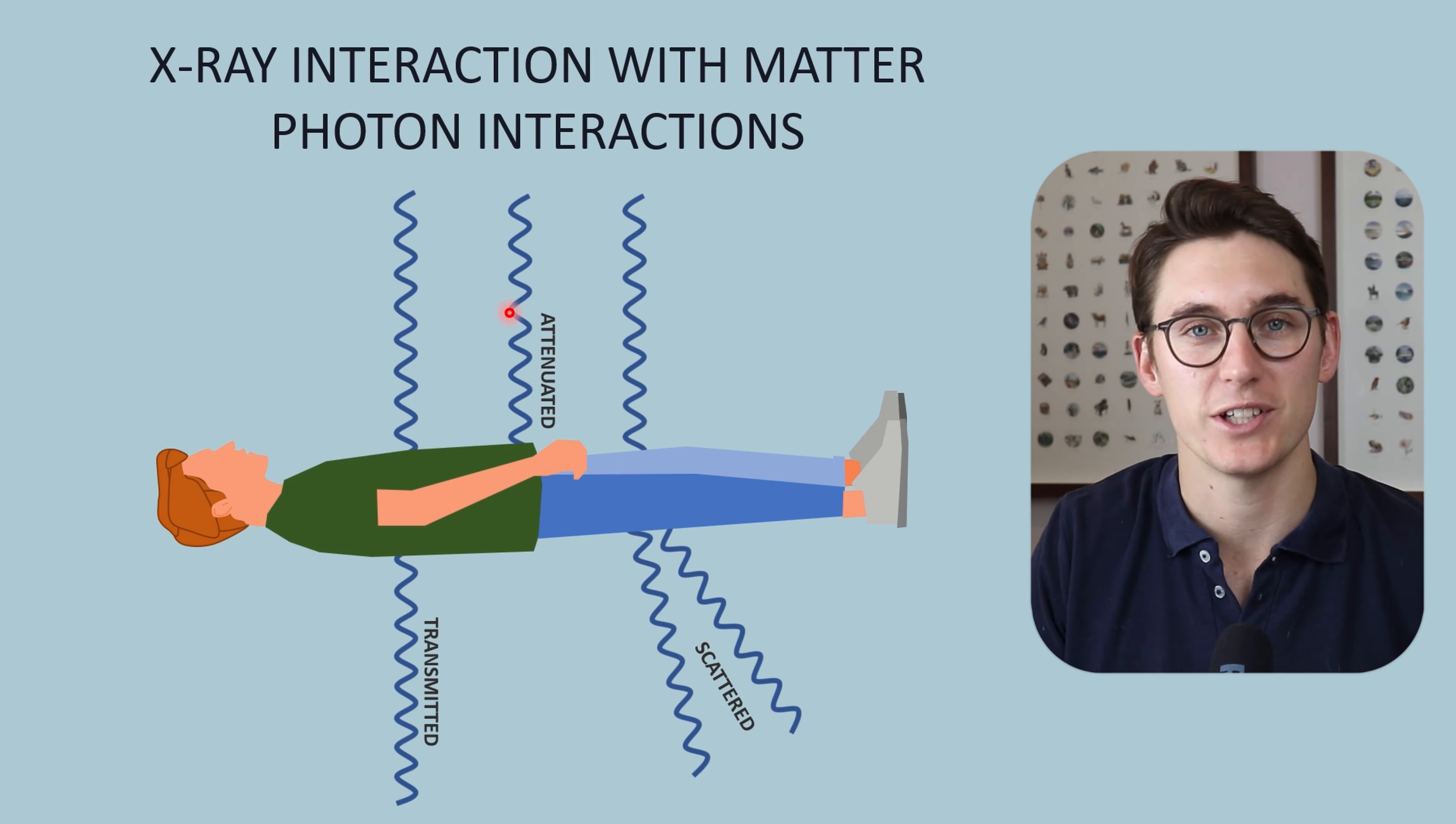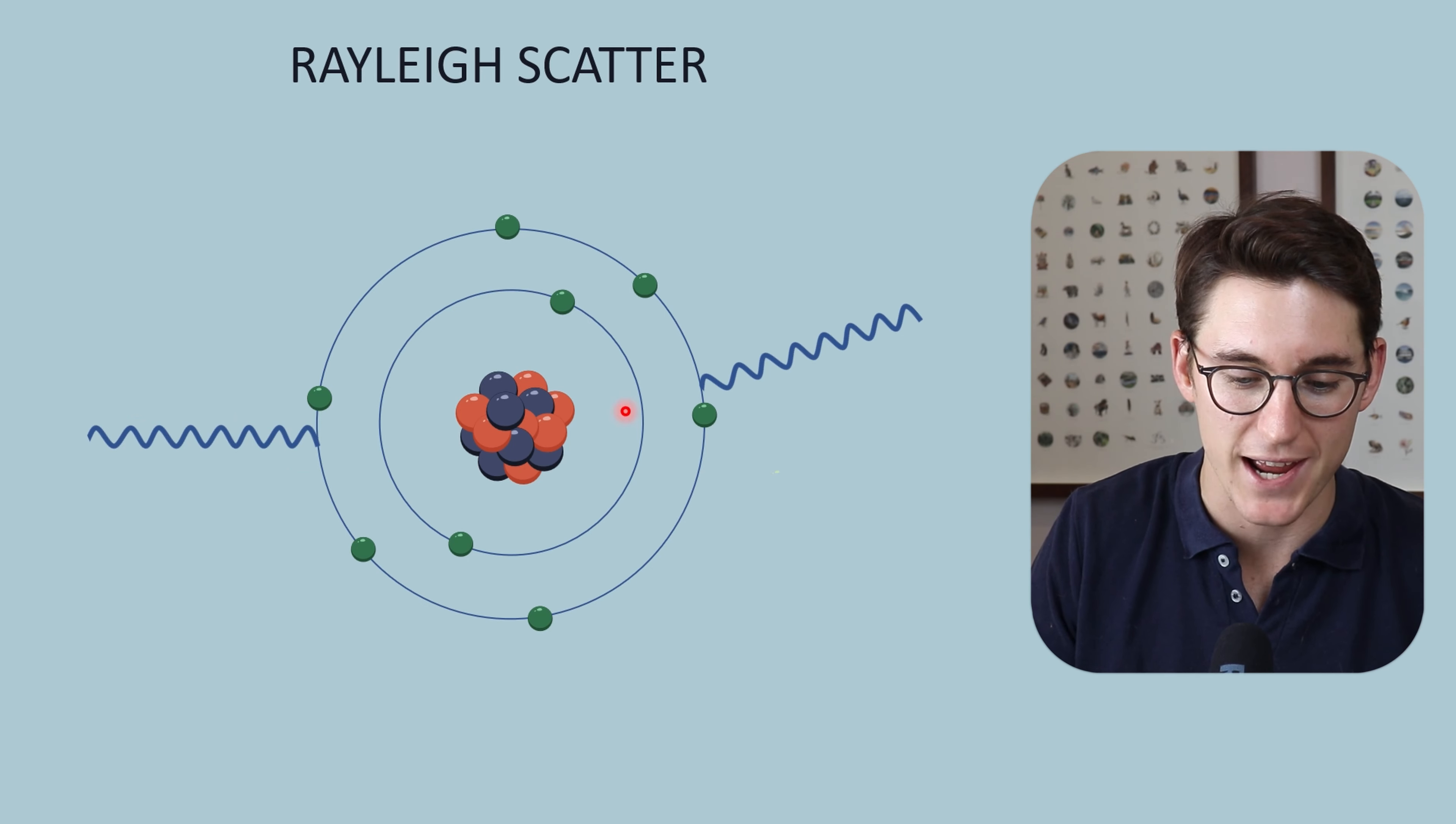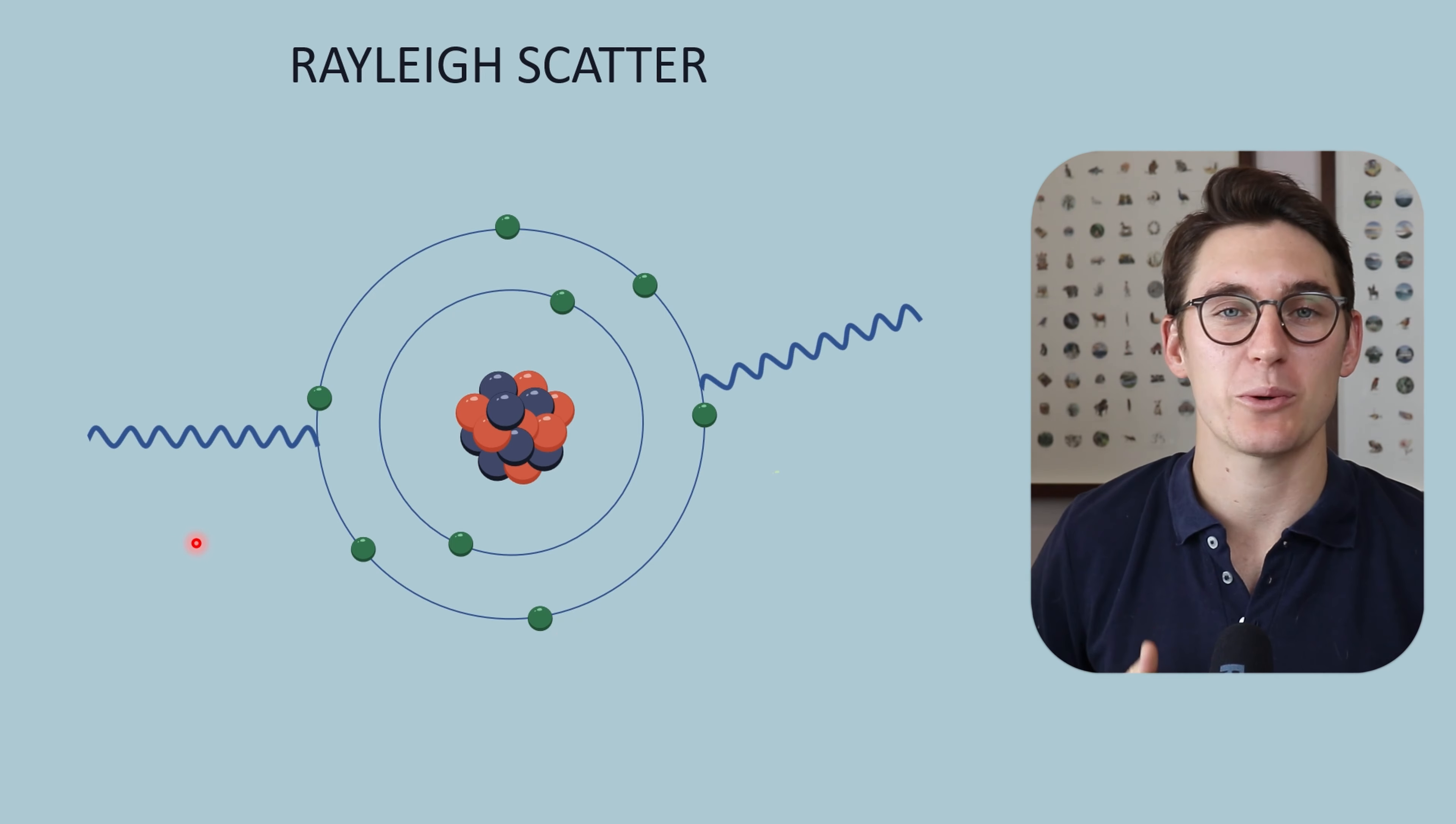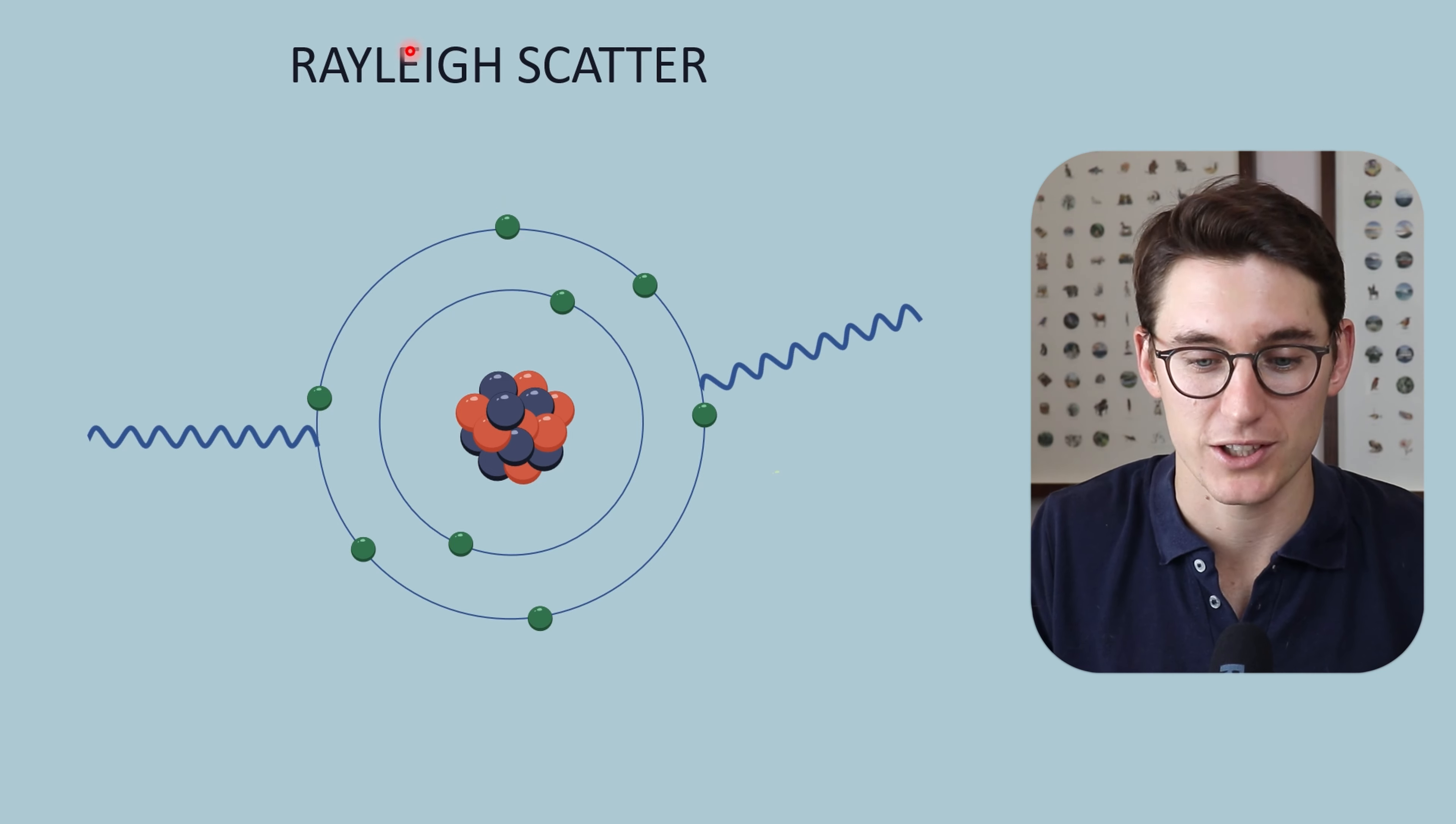Let's just touch on the three interactions: transmitted, attenuated, or scattered. Rayleigh elastic coherence scatter happens as a scattering event. Now what is Rayleigh scatter? We have an incident x-ray coming from our x-ray machine that interacts with an atom in our patient. Rayleigh scatter generally occurs at larger wavelengths of our incident x-ray—larger wavelengths, lower frequencies, lower energies—and generally when the atom interacting with that incident x-ray is smaller than the wavelength of the incident x-ray, we can get this phenomenon known as Rayleigh scatter.